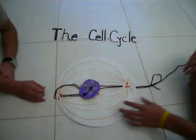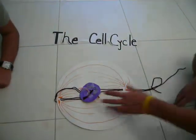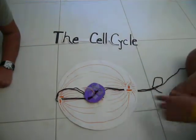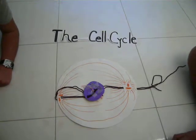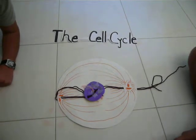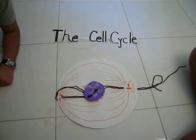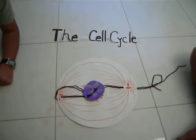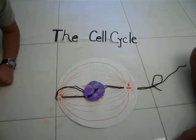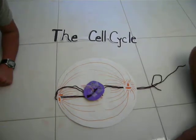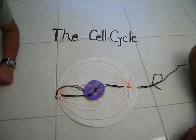The first phase of mitosis is the prophase, during which the chromosomes become visible and the centrioles are aligned outside the cell.